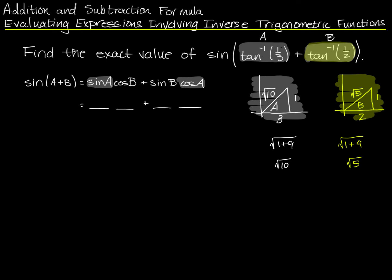Now I have all three sides for both triangles, so I can find the sine of A. It's one over root ten, and the cosine of A is three over root ten, so I can fill in those blanks. And then I can find the sine of B. Let me highlight. Sine of B and cosine of B. The sine of B is one over root five. The cosine of B is two over root five. I'm going to fill in those blanks. Sine of B is one over root five. Cosine of B is two over root five.